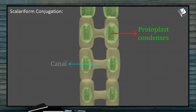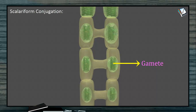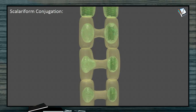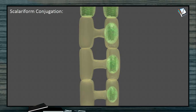Meanwhile, the protoplast in each cell condenses and rounds off — this protoplast is now called a gamete. The cell that produces the gamete is called the gametangium. The canal produced between the two cells is called the conjugation tube. The gamete of one cell starts migrating into the other cell by amoeboid movement and fertilizes with the other gamete, forming a zygote. This zygote is diploid.